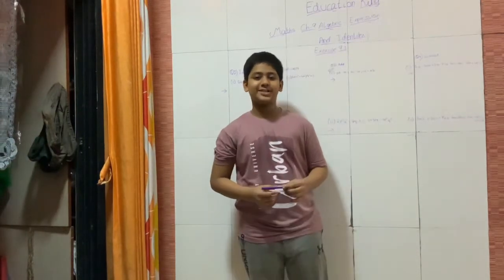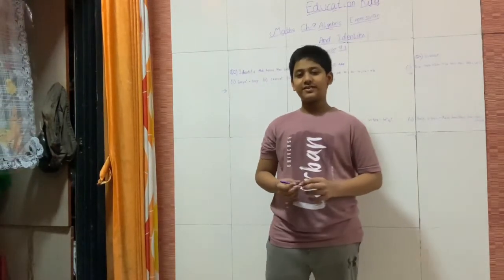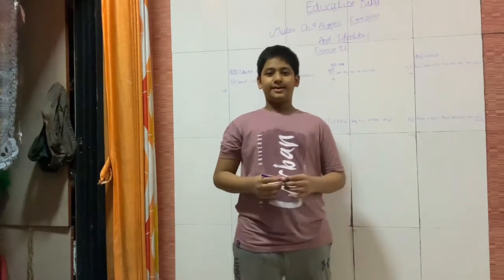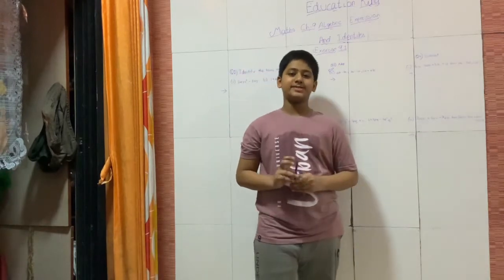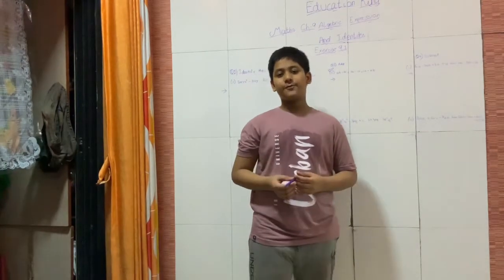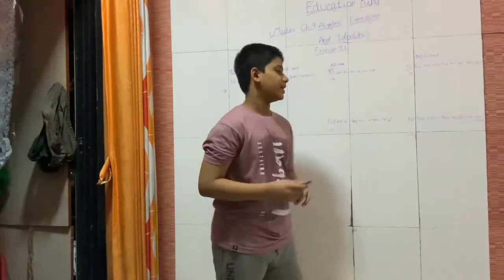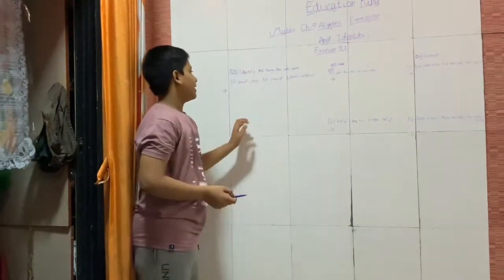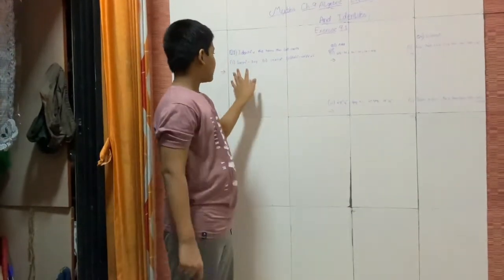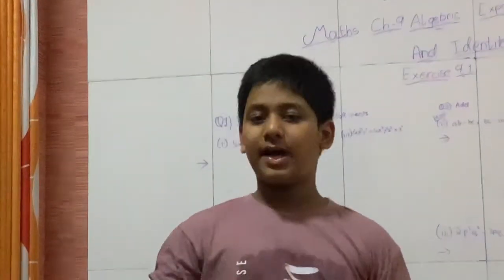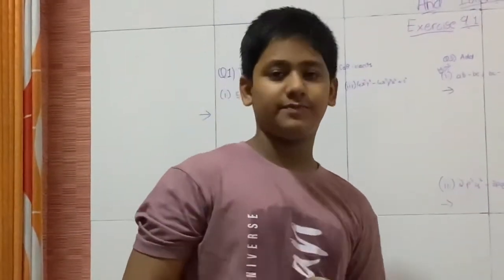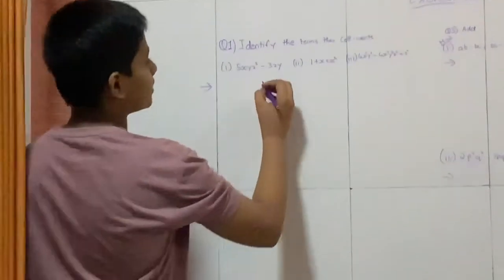Hello friends, welcome to channel Education Games. In this video we are going to learn about Class 4, Chapter 9 - Algebraic Expressions and Identities. Today we are going to solve Exercise 9.1. The first question is to identify the terms and coefficients. I have written the first three questions; I will explain and the rest are like homework you can do by understanding these. Now let us know about what terms are.